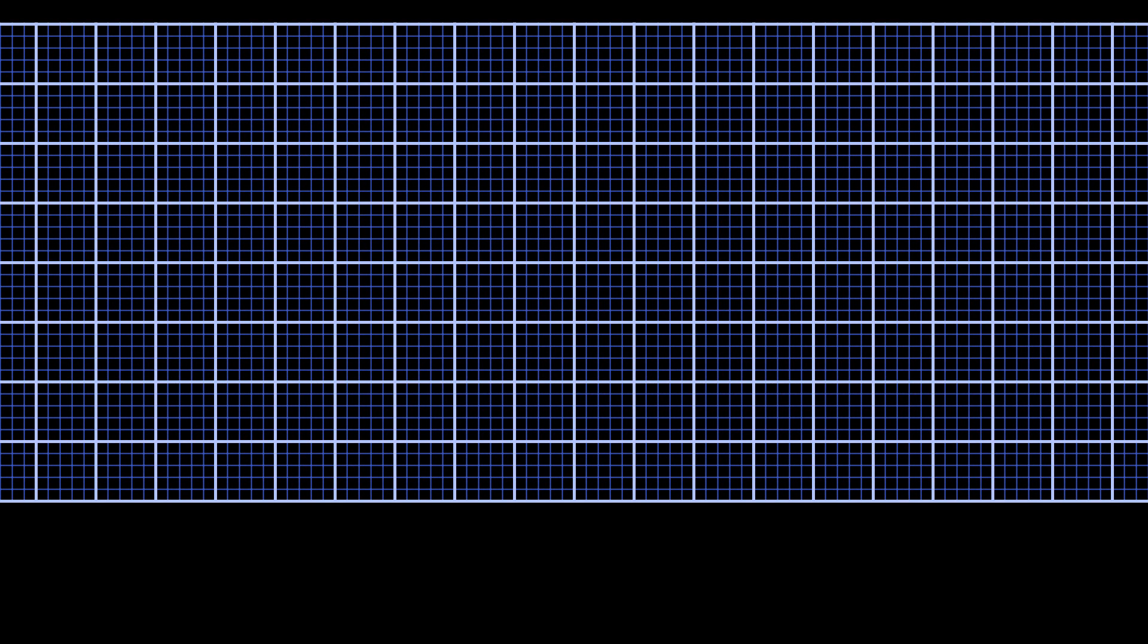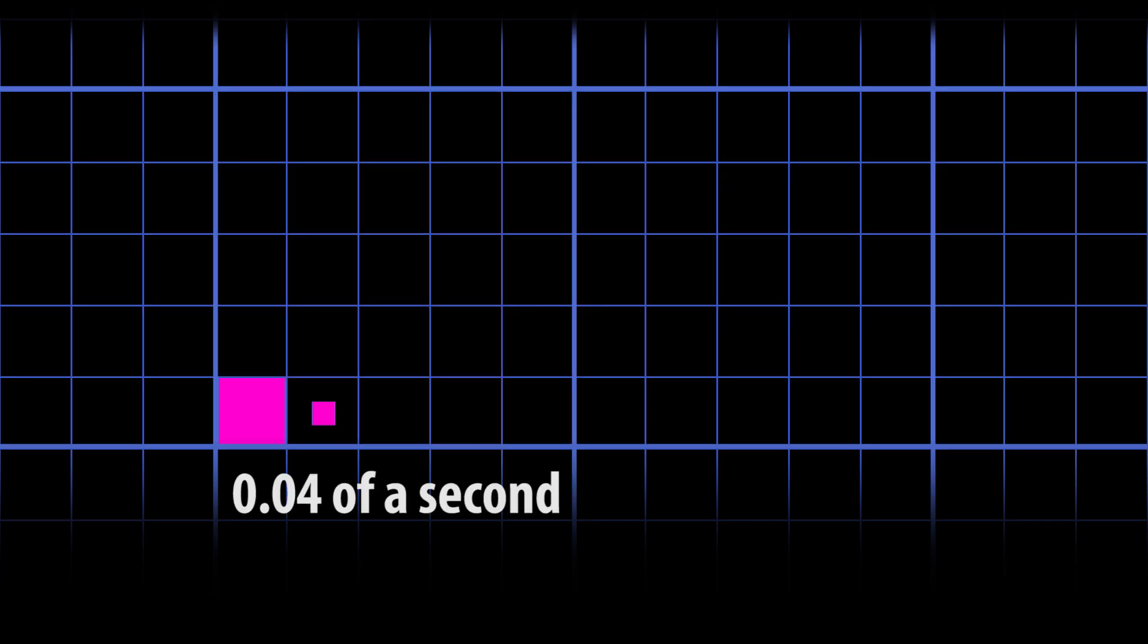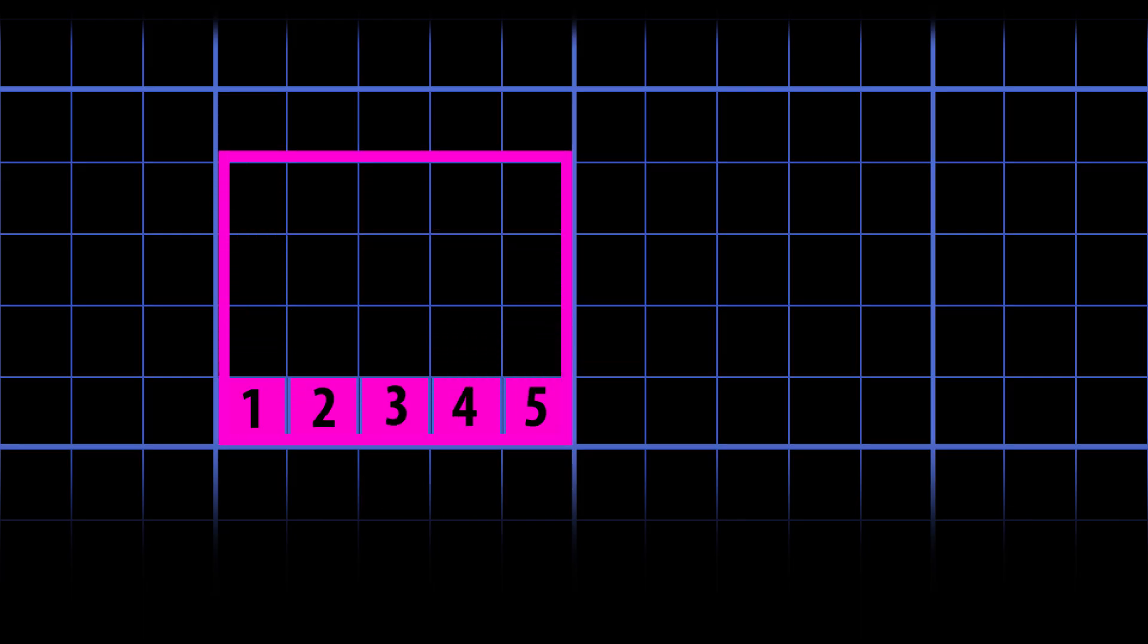So first, let's focus on how to use the graph to measure electrical impulses. The rhythm strip has smaller boxes within a larger box. Each small box represents 0.04th of a second. Five small boxes are in one large box.